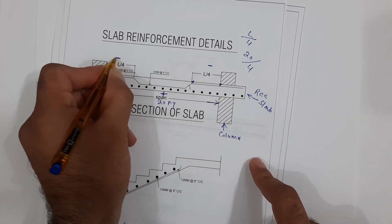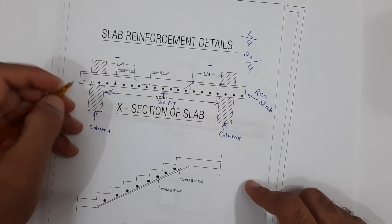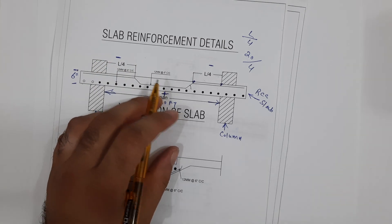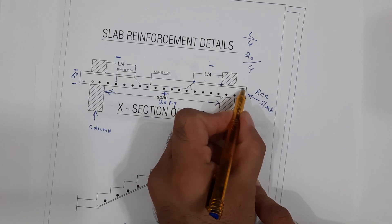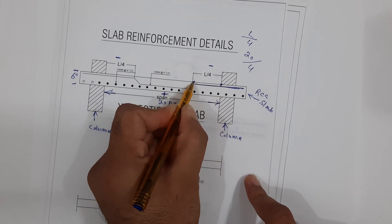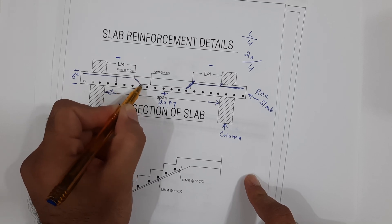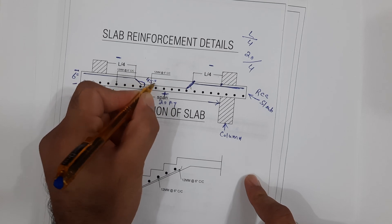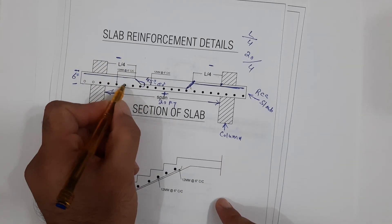At the negative bending moment zone we provide the crank bar. The thickness of this slab is six inches. We have main bars and distribution bars. The crank bar, or bent-up bar, bend is provided at the distance of L/4 — same on both sides, it is a mirror. The bent-up bar angle you can keep from 45 to 60 degrees.